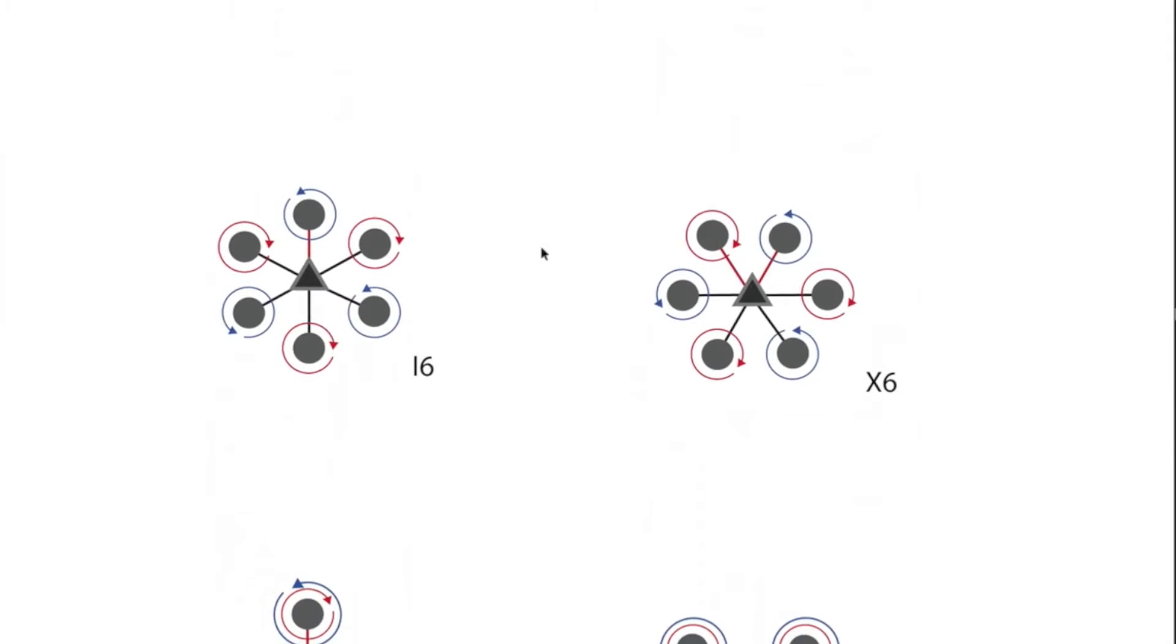We have the hexcopter. This is just like the quadcopter, only there are six motors. And again, you have an i6 or x6 configuration. With more motors, you have more lift capacity, so you can lift heavier payloads, bigger cameras. You also have some redundancy.